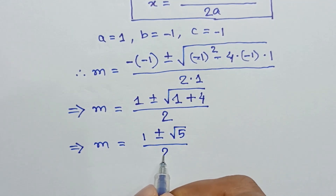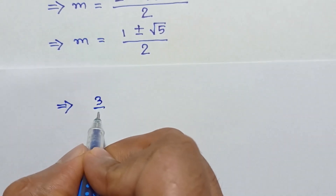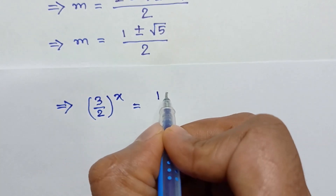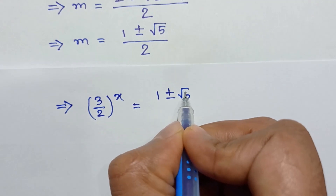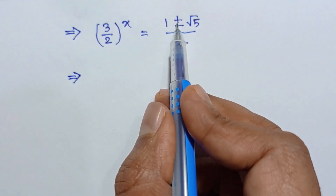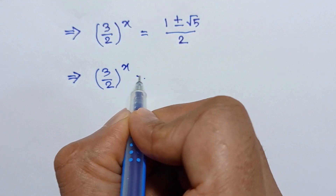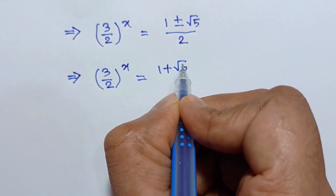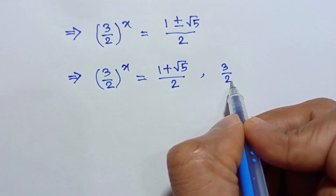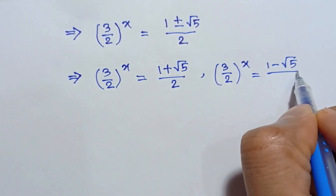So M equals 1 plus or minus the square root of 5, all over 2. Substituting back, (3 over 2) to the power x equals (1 plus square root of 5) over 2 for the positive case, and (3 over 2) to the power x equals (1 minus square root of 5) over 2 for the negative case.